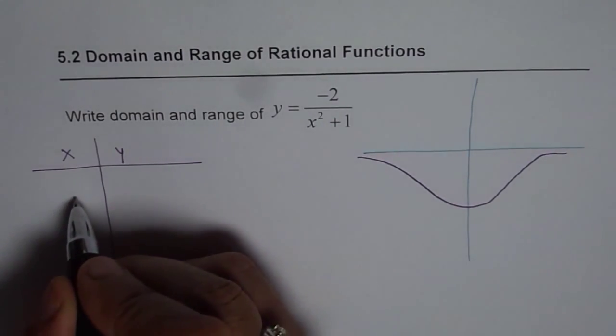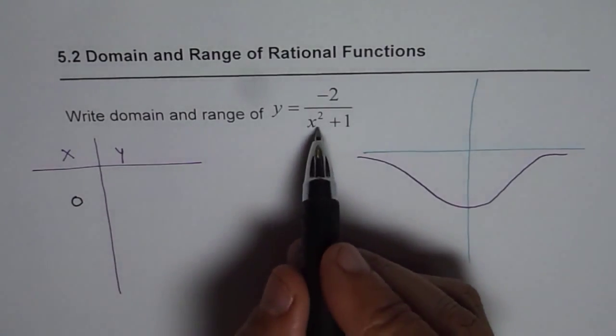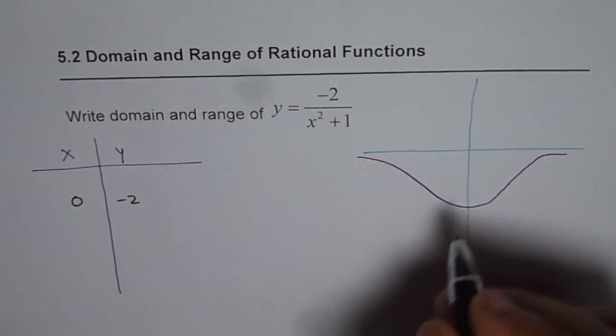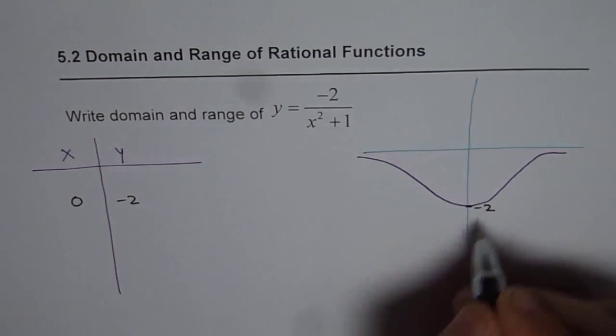So if I write x equals to 0 here I get minus 2 over 1 so I get y value of minus 2. So at 0 I have minus 2.